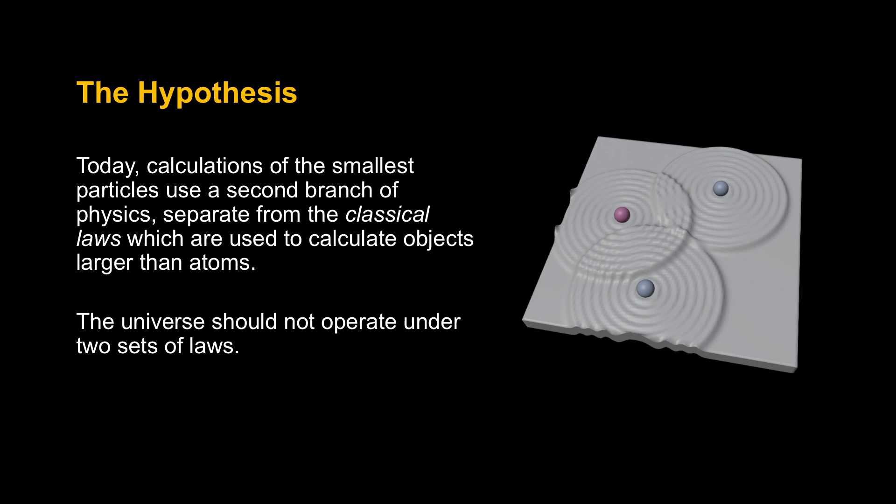And when we cannot see something physically with our eyes, we need to interpret what it's doing. And we do so with explanations, with mathematics. And unfortunately, everything that is smaller than the atom that we can't see is governed by a separate branch of physics. And it's separate from the classical laws, the laws that are used to calculate objects larger than atoms that we can see. And the question is, why?